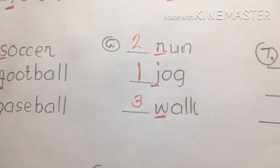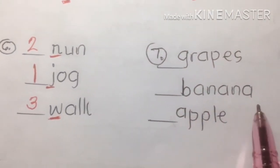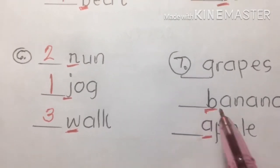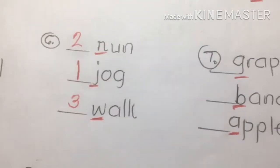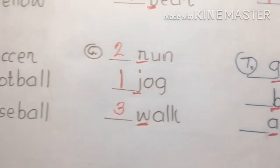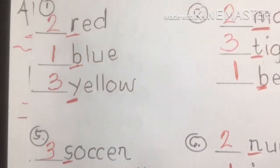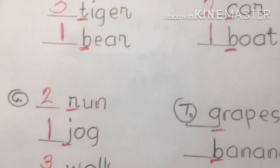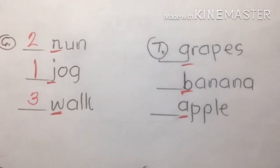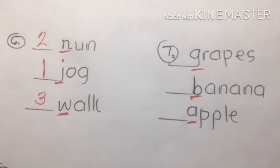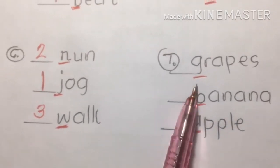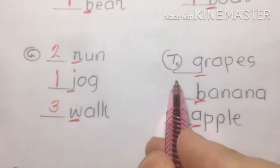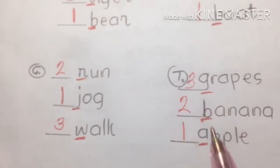Number seven: grapes, banana, apple — these are fruits. Underline the initial sound or first letter of each word. The answer: apple is number one — A comes first. Banana is second — B. And grapes is third — G. So: apple, banana, grapes.